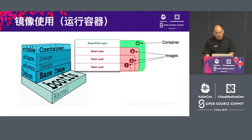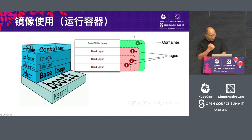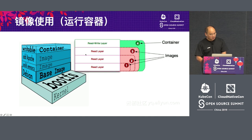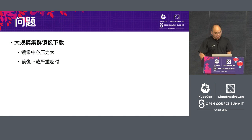When the container is running, it needs to read and write the file system. In the container running situation, the lower layers are read-only image layers. The top layer is a read-write layer — this is the container layer. Data that is read or written is all in this top layer and is labeled. The underlying image layers are not deleted.